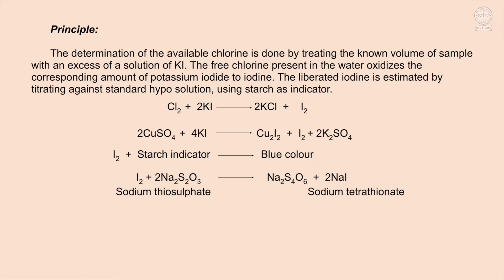The free chlorine present in the water oxidizes the corresponding amount of potassium iodide to iodine. The liberated iodine is estimated by titrating against standard hypo solution using starch as an indicator.